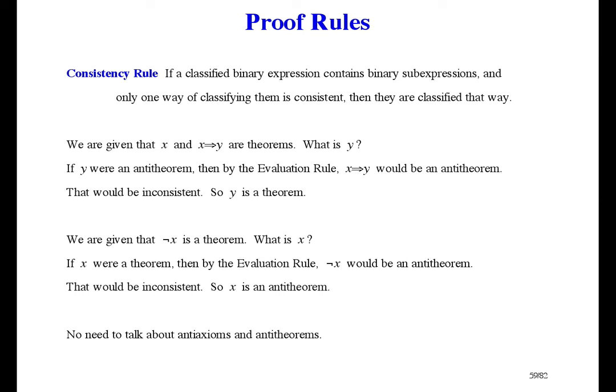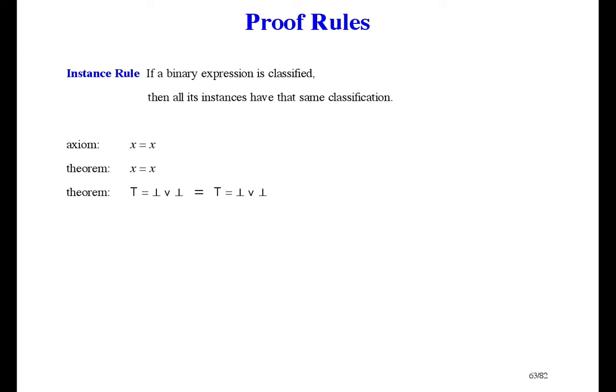On to the last proof rule: the instance rule. If a binary expression is classified as a theorem or an anti-theorem, then all its instances have that same classification. For example, in the textbook there's the axiom x equals x. By the axiom rule, it's a theorem. So if I substitute any expression for both x's, it's still a theorem. Notice the two sizes of equal sign, just to keep the precedence right. We could evaluate this expression to find out that it's a theorem, but the instance rule says it's a theorem just because the two sides are the same. In this other example we cannot evaluate the two sides, but it is still an instance of x equals x, so it's a theorem.